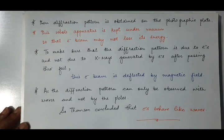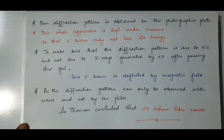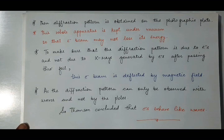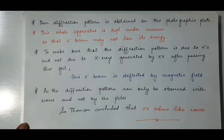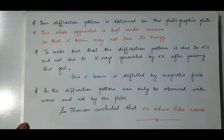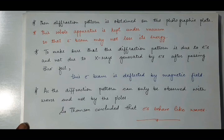There is also the possibility that when the beam of highly energetic electrons passes through the foil, X-rays may be produced by this electron beam when it collides with the atoms of the thin gold foil. So there is a chance that the final diffraction pattern is produced by X-rays generated by the electron beam while passing through the thin gold foil, and not by the electrons themselves.